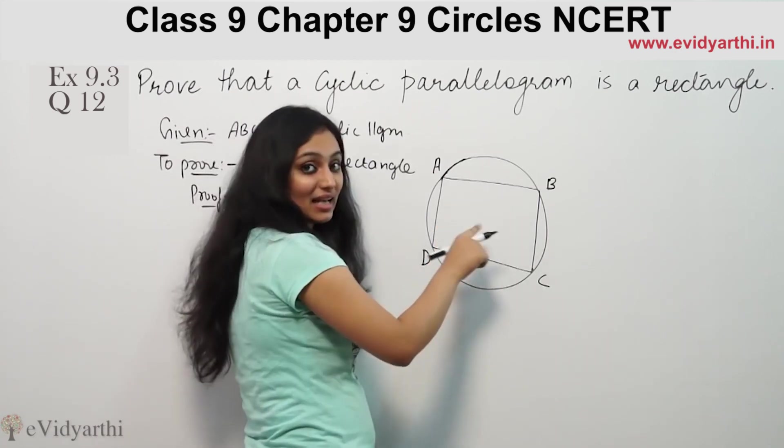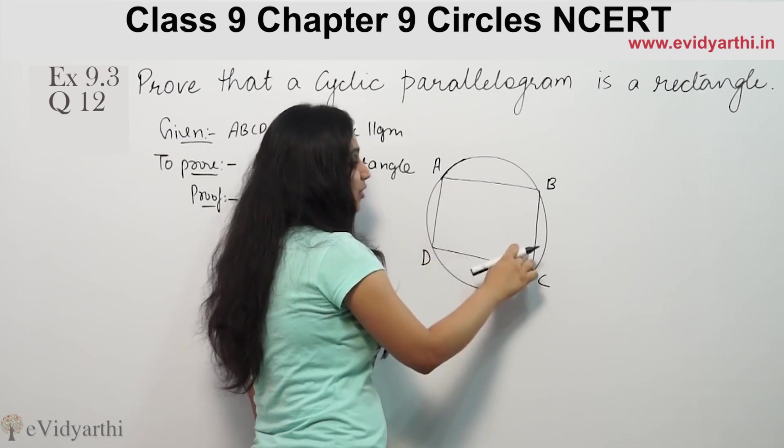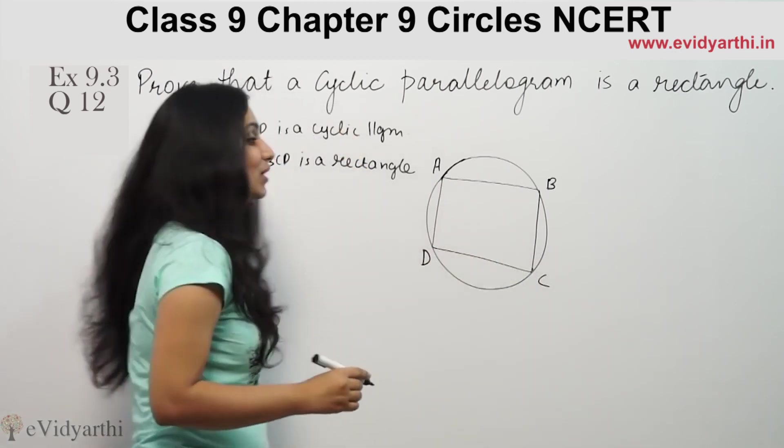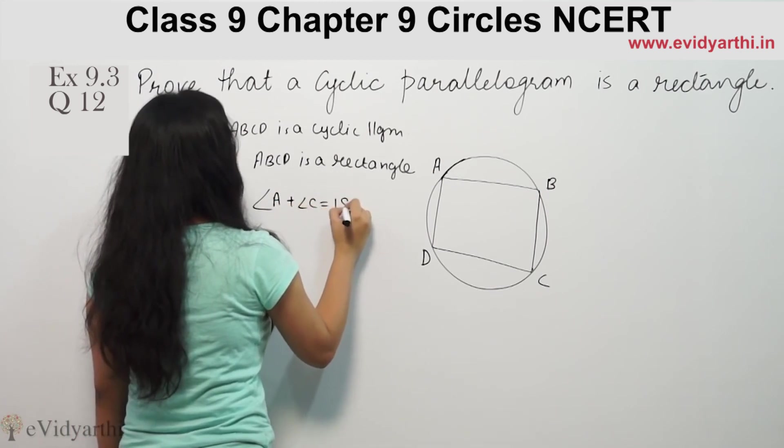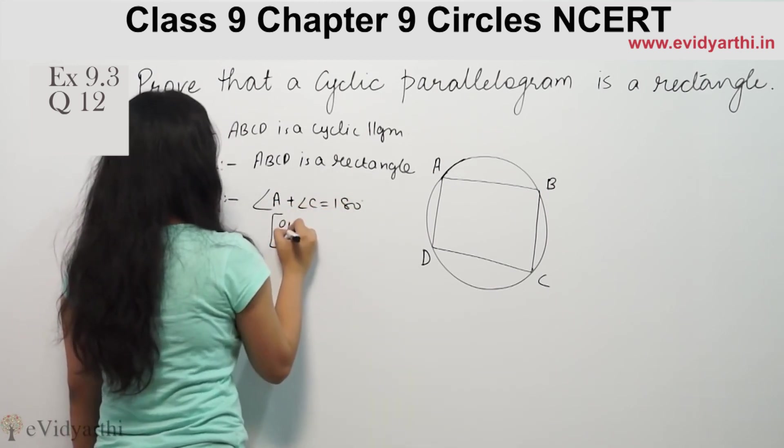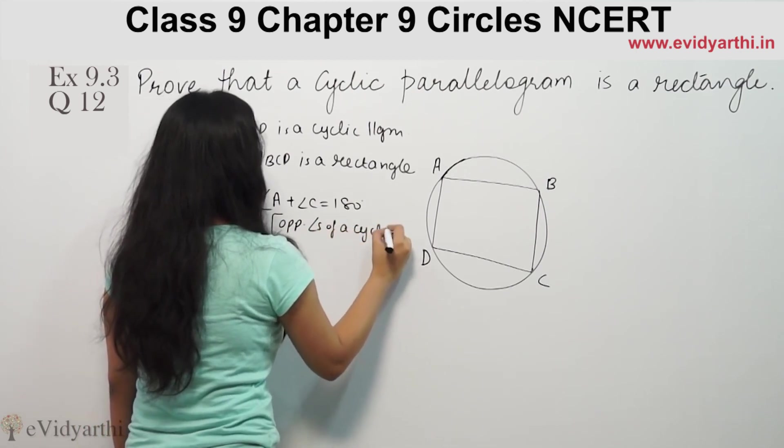Now we know that if it is cyclic, it means that opposite angles of a cyclic quadrilateral, so angle A plus angle C is equal to 180 degrees. Opposite angles of a cyclic quadrilateral.